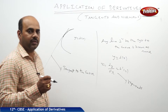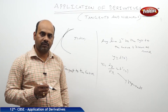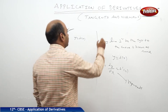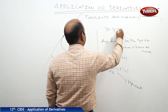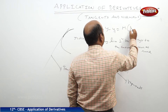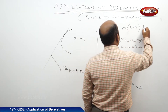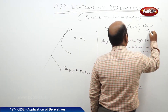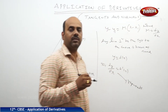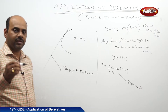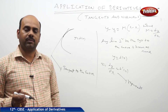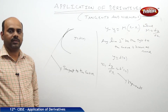If a point is given to us and we need to find the equation of the tangent to the curve, then we use the formula y - y₁ = m(x - x₁), where m is dy/dx. All these things we have learned in our eleventh class. Once again, we shall start doing numericals based on Tangent and Normals.